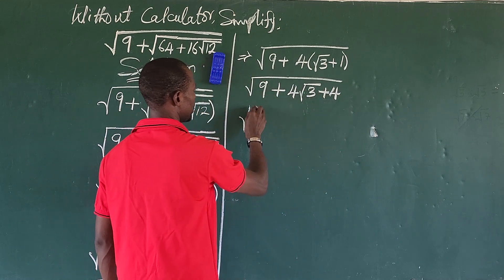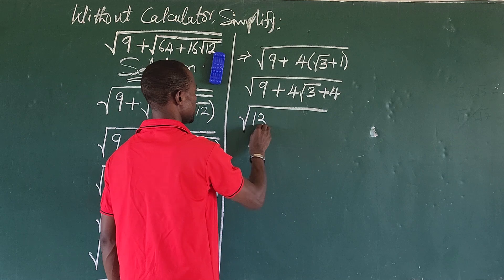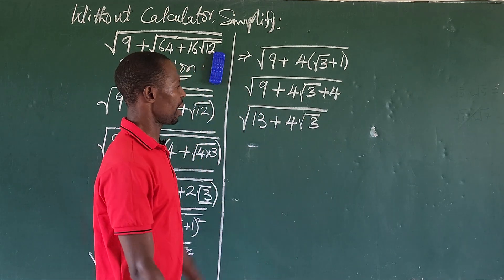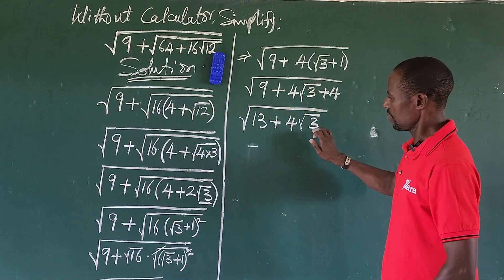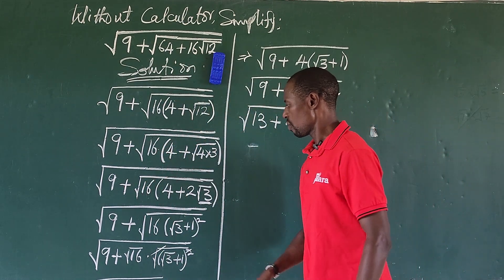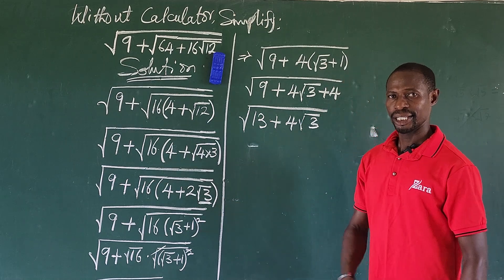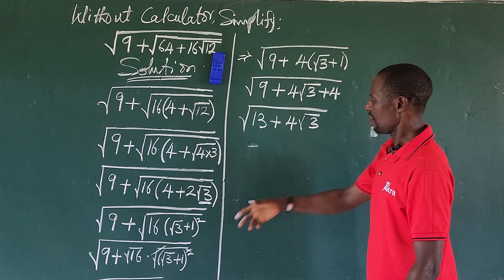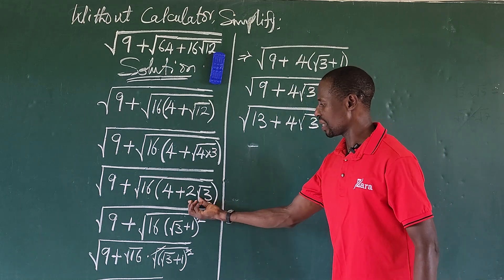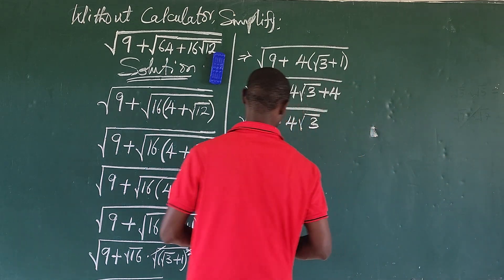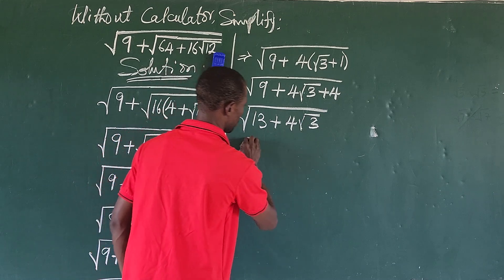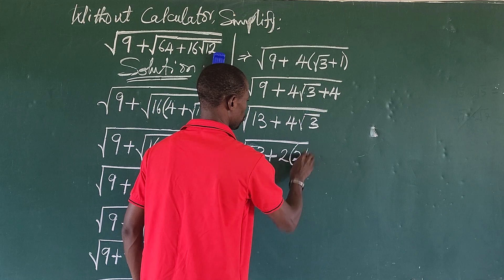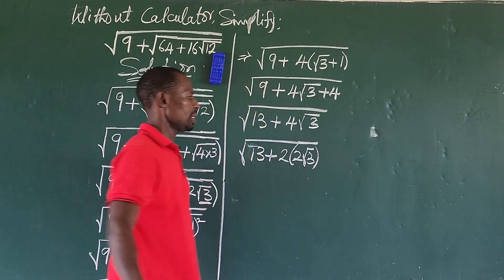Opening up that bracket gives us the square root of 9 plus 4 root 3 plus 4. We can add 9 and 4 together to get 13 plus 4 root 3. Notice this is similar in form to what we had before — the only difference is the coefficient: here we have 4 instead of 2, so we rewrite this as 13 plus 2 times (2 root 3).